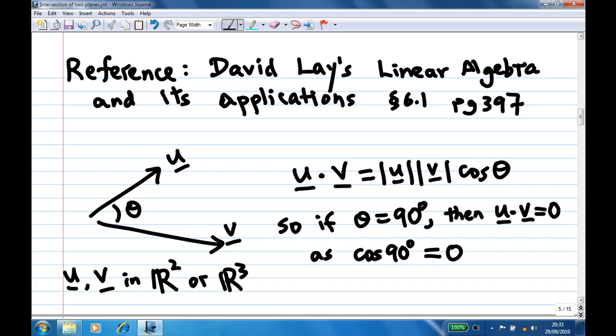I have simplified it. Let's say I have two vectors u and v in three-dimensional space. Let's say the angle between them is theta. Then it says that the dot product between u and v is equal to the length of u times the length of v cosine theta.